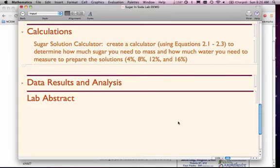Hello, this short podcast shows you how to create a sugar solution calculator. You're going to use this calculator to determine how much sugar you need to mass and how much water you need to measure to prepare four solutions for the sugar and soda lab. You have 4%, 8%, 12%, and 16% solutions that you need to prepare, and I'm going to use the 16% solution as an example.